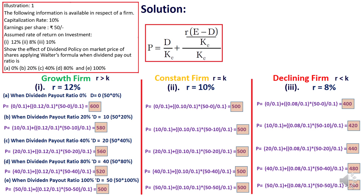This is quite opposite to the growth firm where R is greater than K. So in this way, we can divide firms into three categories: growth firm, constant or normal firm, and declining firm.